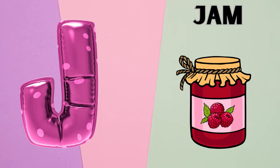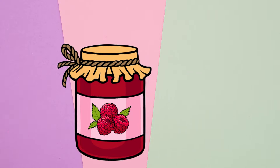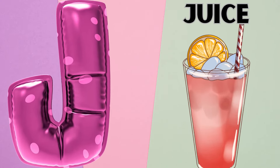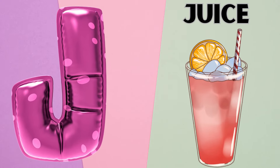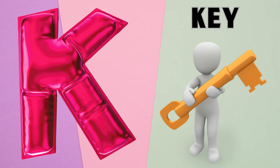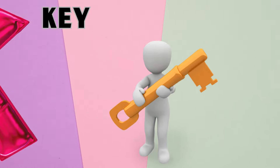J is for Jam. J, J, Jam. J is for Juice. J, J, Juice. K is for Key. K, K, Key.